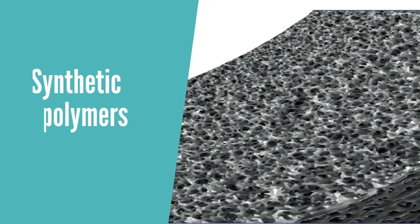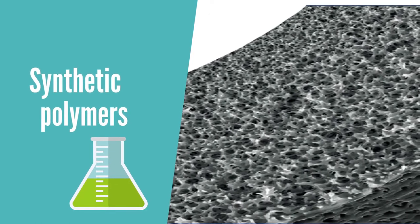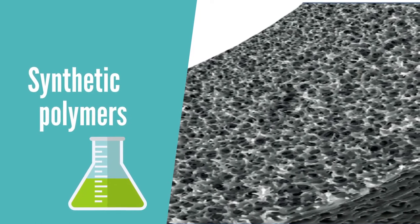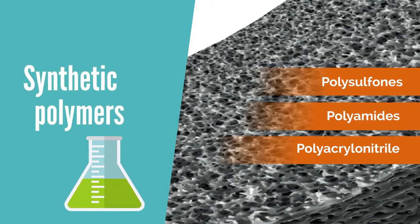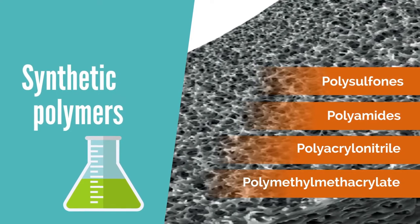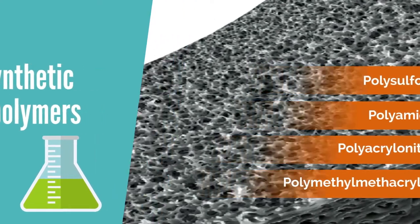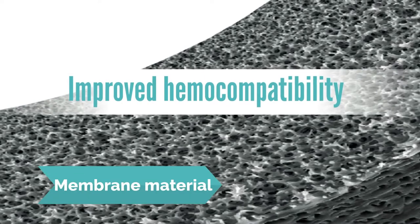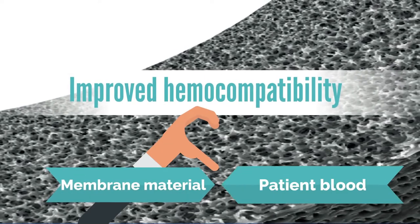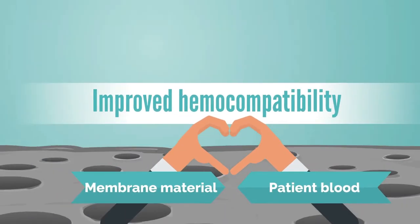Thereafter, membranes made from synthetic polymers such as polysulfones, polyamide, polyacrylonitrile, or polymethylmethacrylate replaced cellulose membranes because of their versatility and improved hemocompatibility profiles.